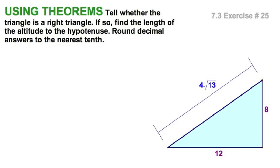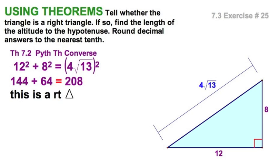Let's find the altitude to hypotenuse of this triangle. First, we have to confirm that it is a right triangle.